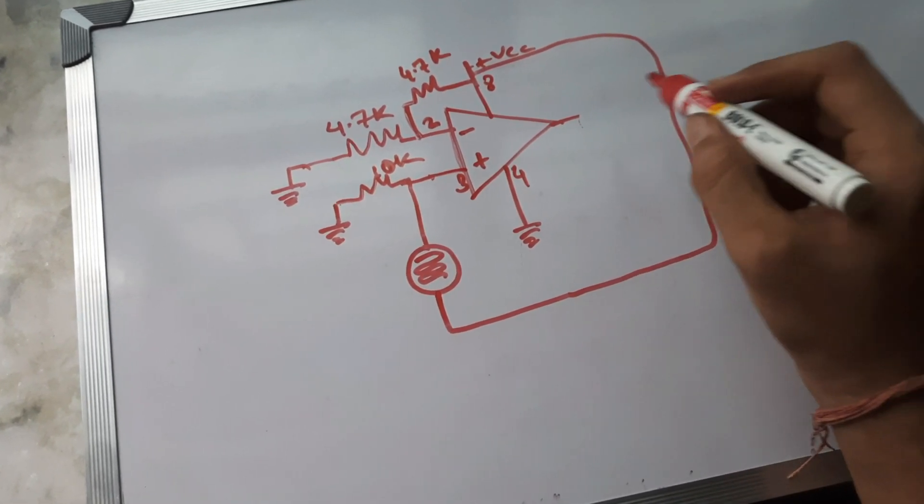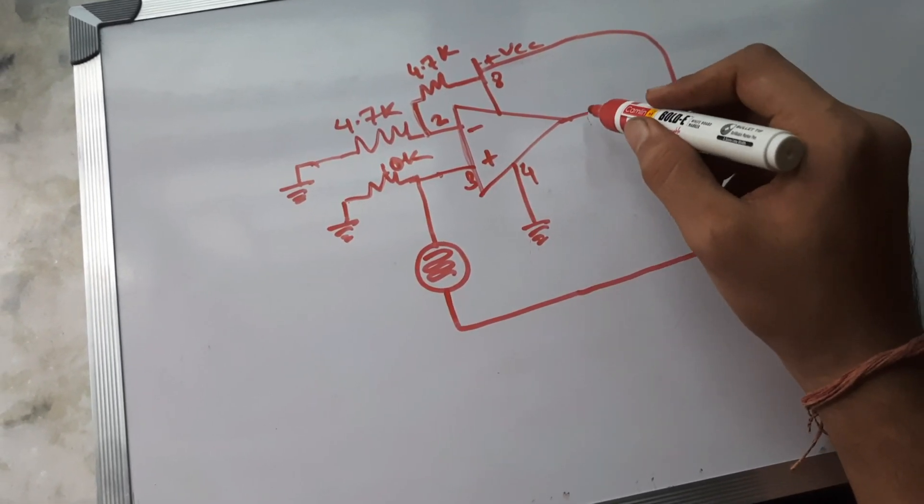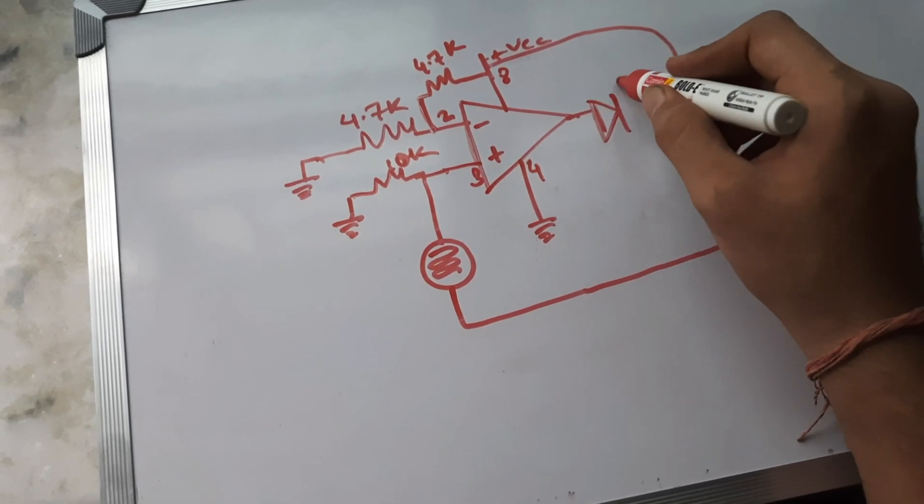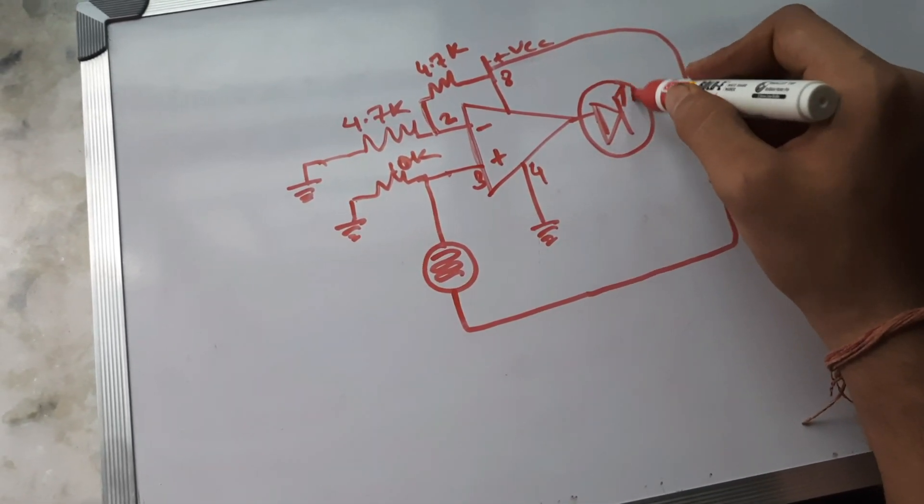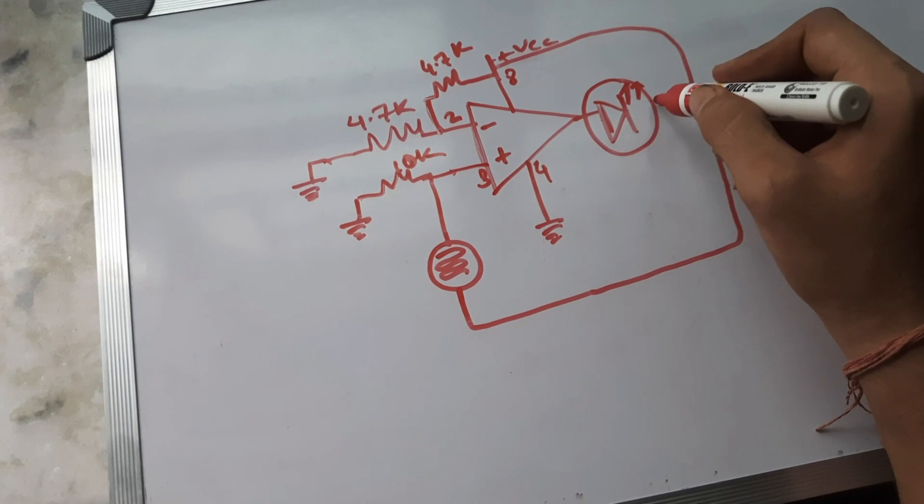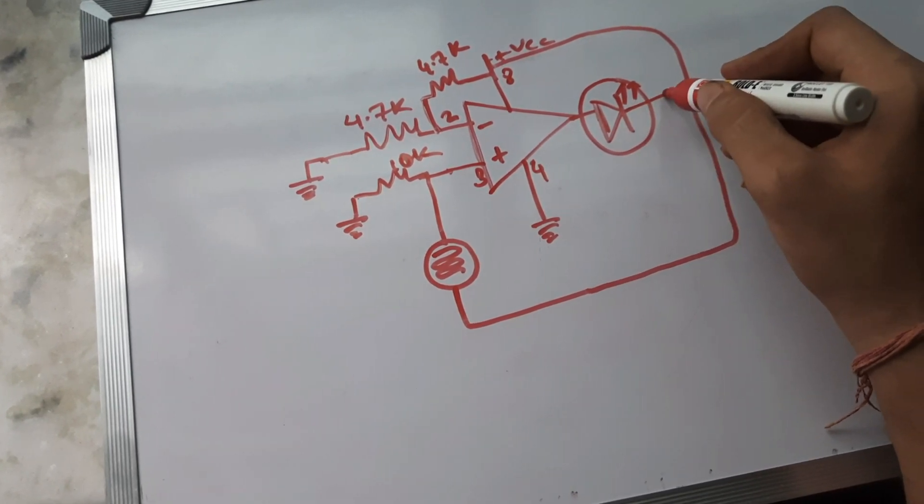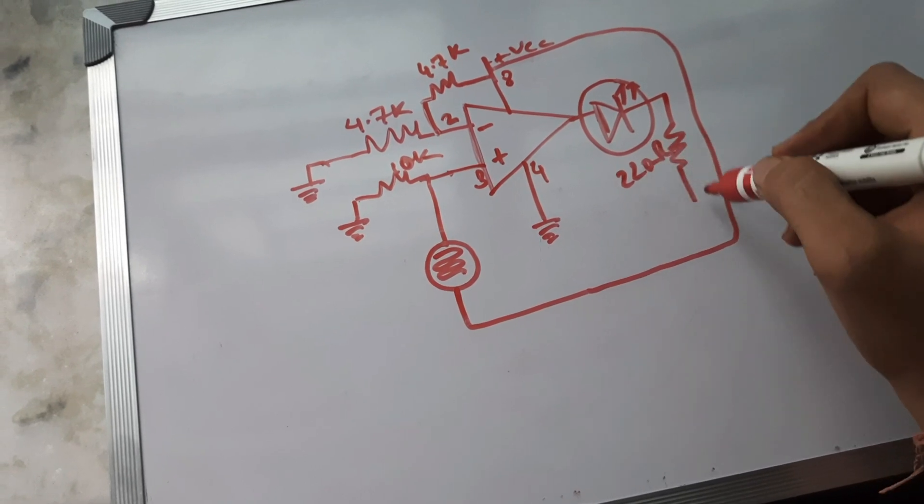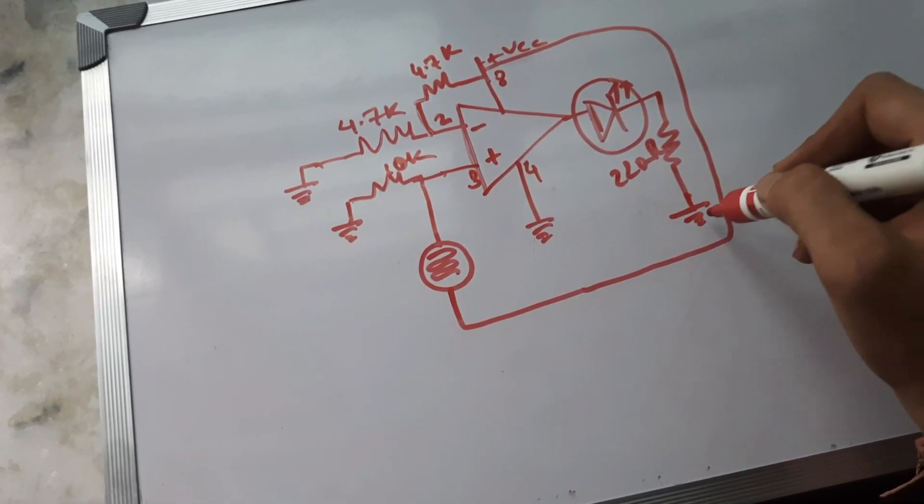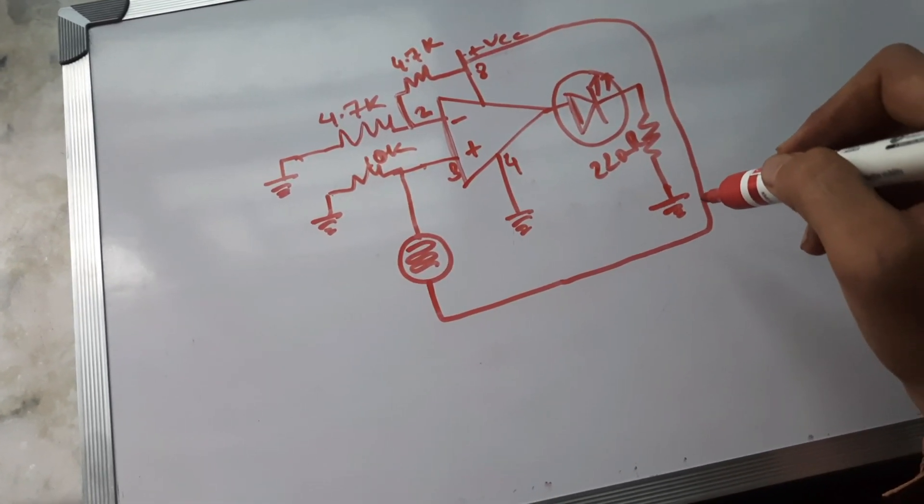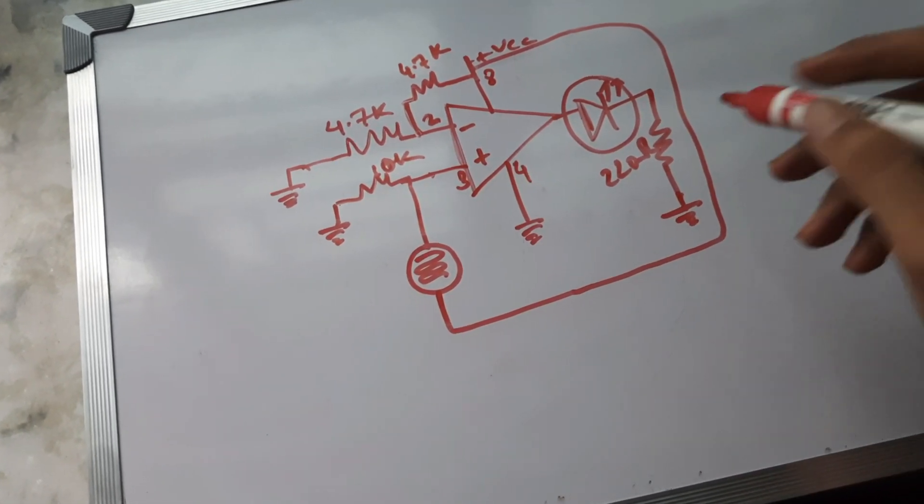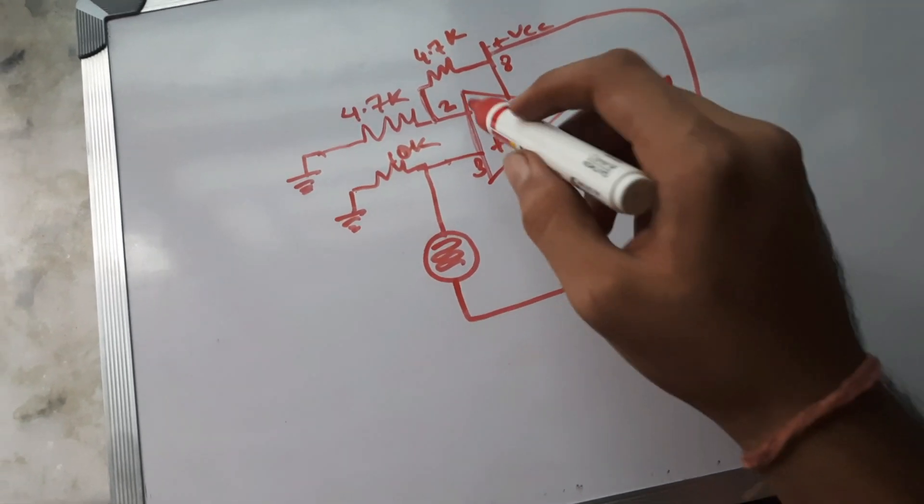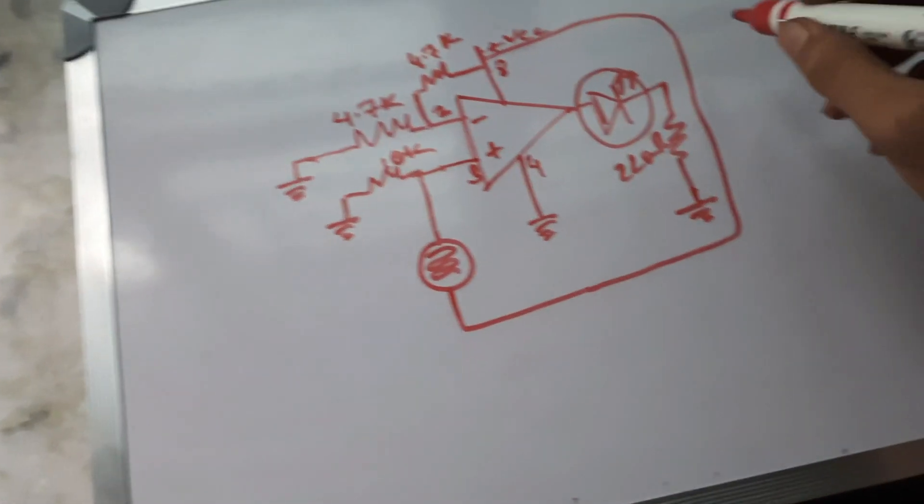Okay, now so the output will be connecting an LED basically. So this is the symbolic representation of an LED. And to the negative terminal of this LED we'll be connecting a 220 ohm resistor so that it's for the protection of LED so that it does not get burnt out with the excess current. And we'll be grounding it.